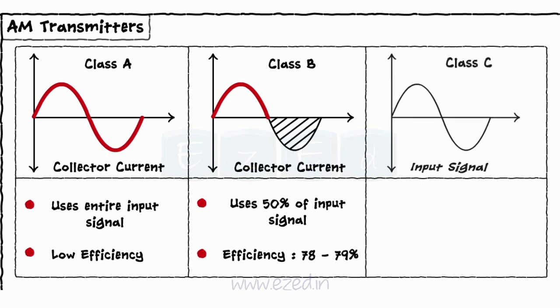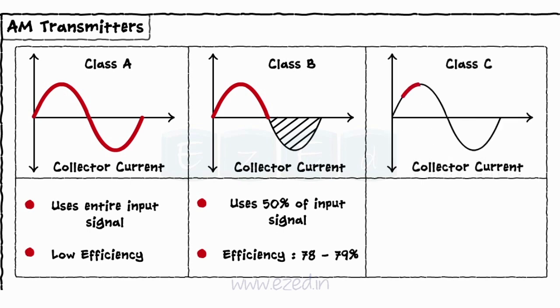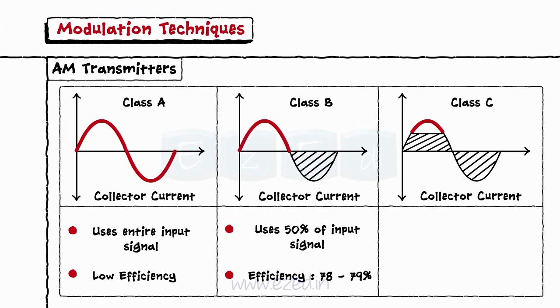In class C amplifier, the collector current flows for less than half of the input signal — that is, it gives an efficiency of around 90%.